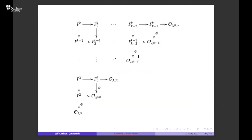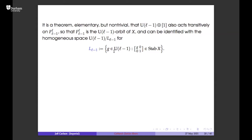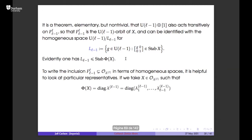It's a theorem that F_{l,l-1} is also a homogeneous space, identifiable with a homogeneous space where the subgroup is a certain group — you can think of it as a subgroup of U(l) or U(l-1). Because the truncation operation is equivariant, it's a subgroup of the stabilizer of the truncation, and that gives the map of homogeneous spaces.